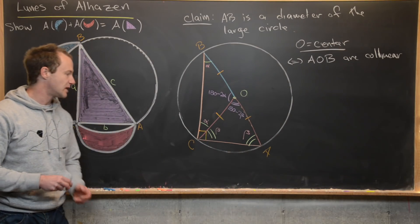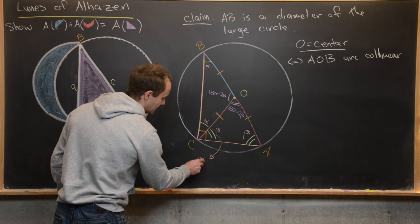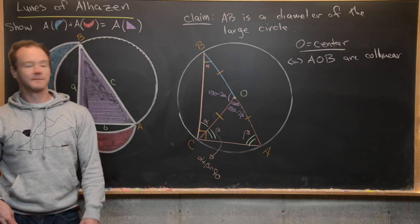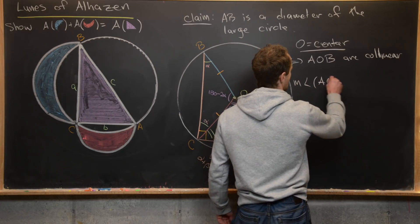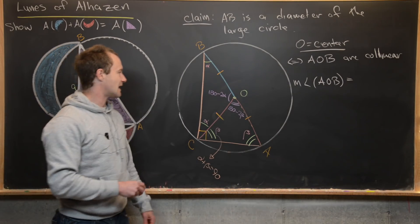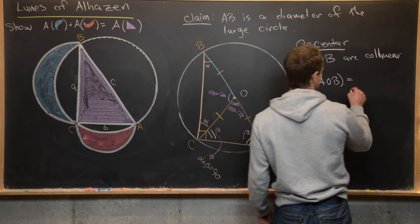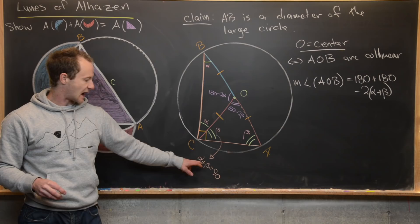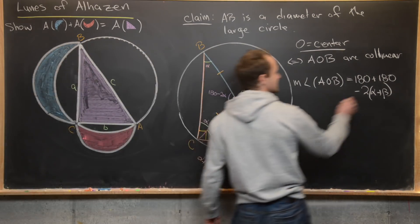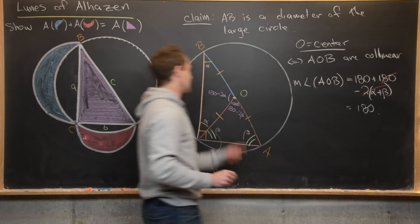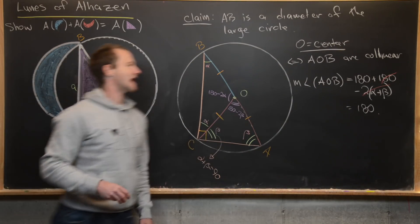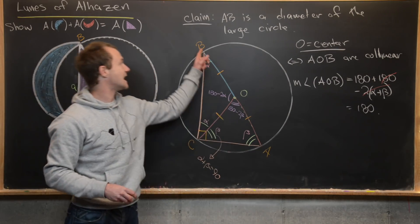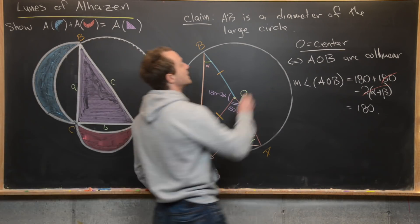Also given is that α plus β equals 90°, because those two angles together form the right angle at C. Now we can compute the measure of angle AOB: it equals (180 − 2α) + (180 − 2β) = 360 − 2(α + β) = 360 − 180 = 180°. An angle of 180° means A, O, and B are collinear. Since AO and OB are both radii, AB is a diameter of the large circle. The claim is proved.